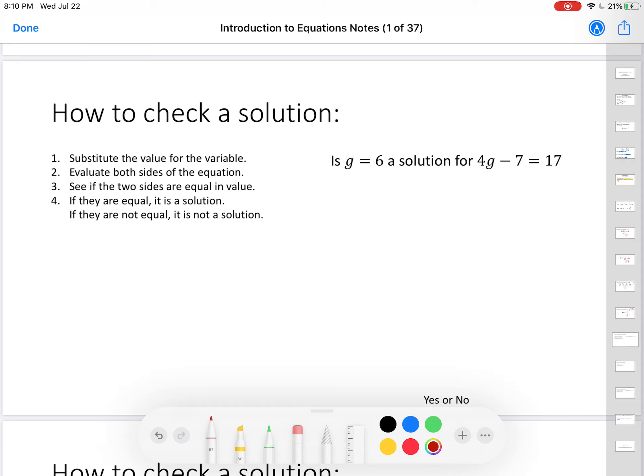Here's how to check to see if something is a solution. First, substitute the value for the variable. Evaluate both sides of the equation. See if the two sides are equal in value. If they are equal, it's a solution. If they're not equal, it is not a solution.